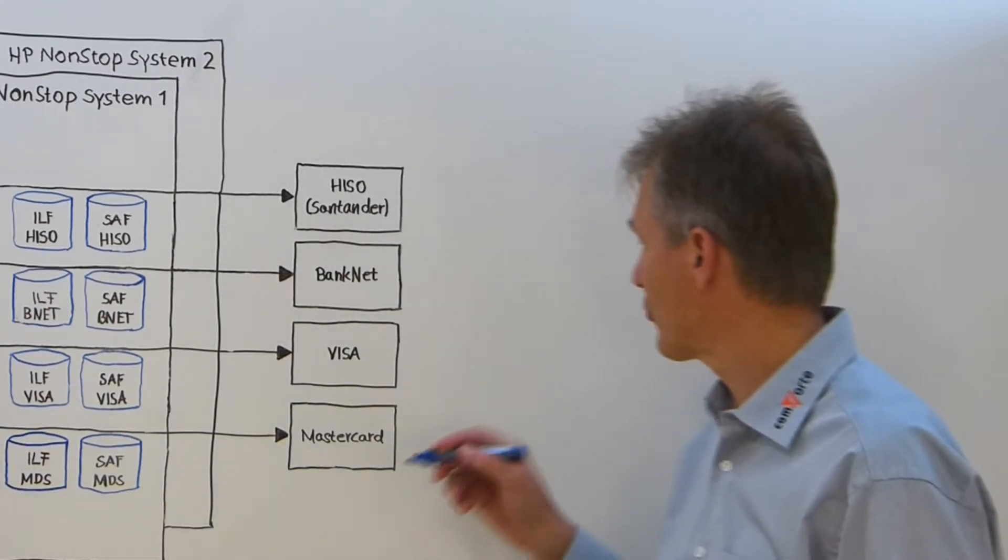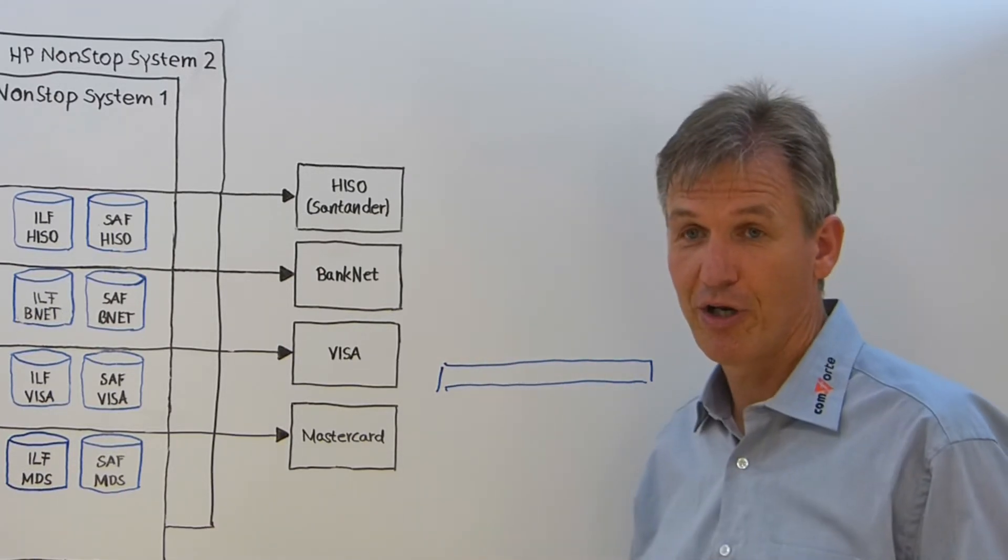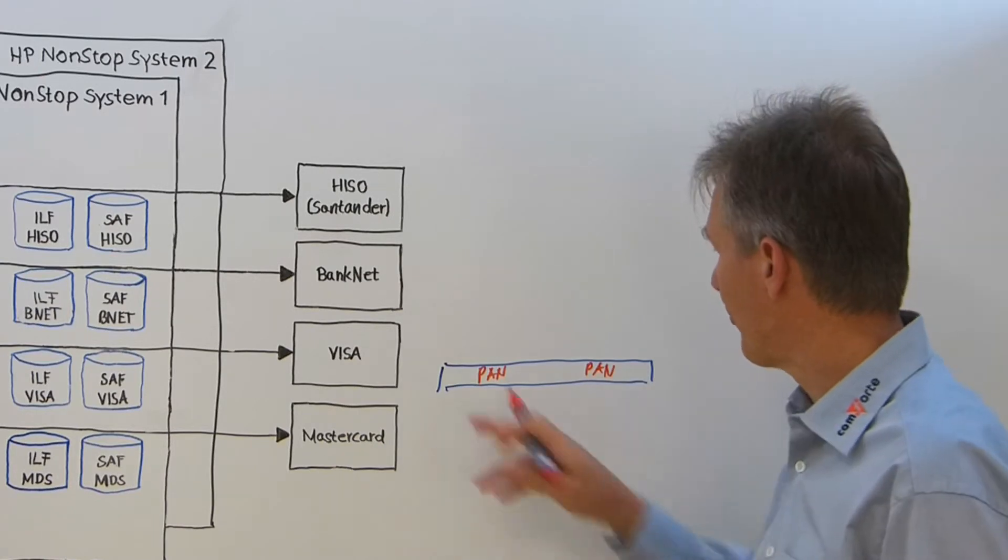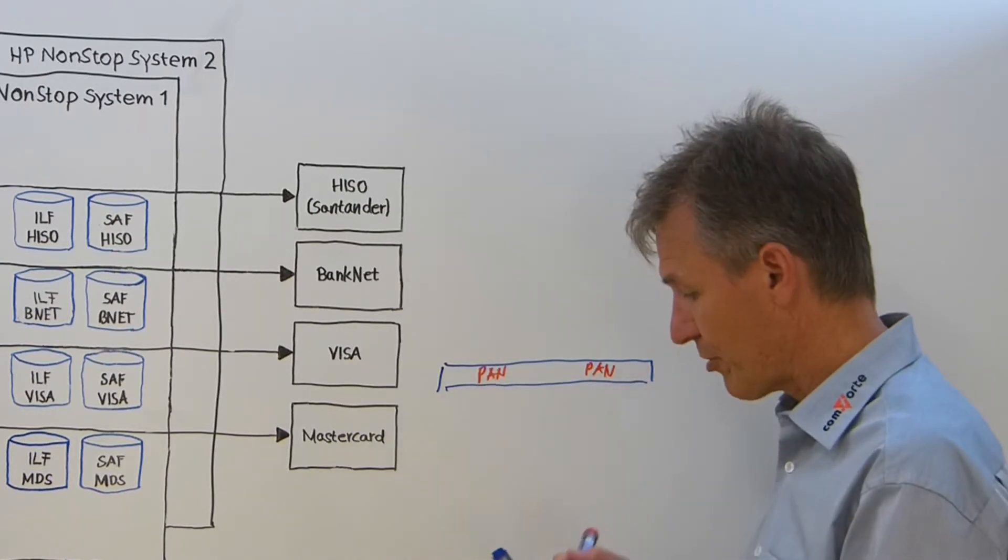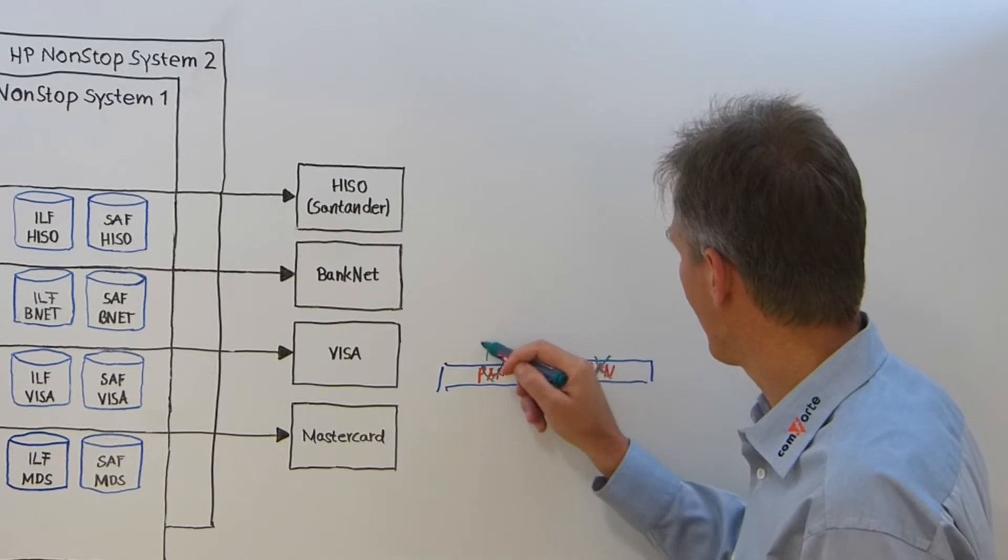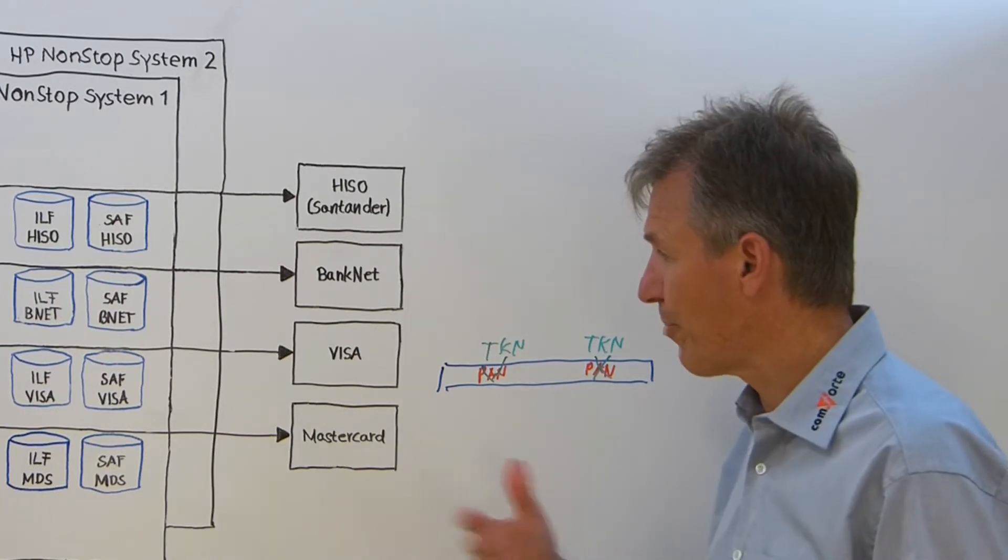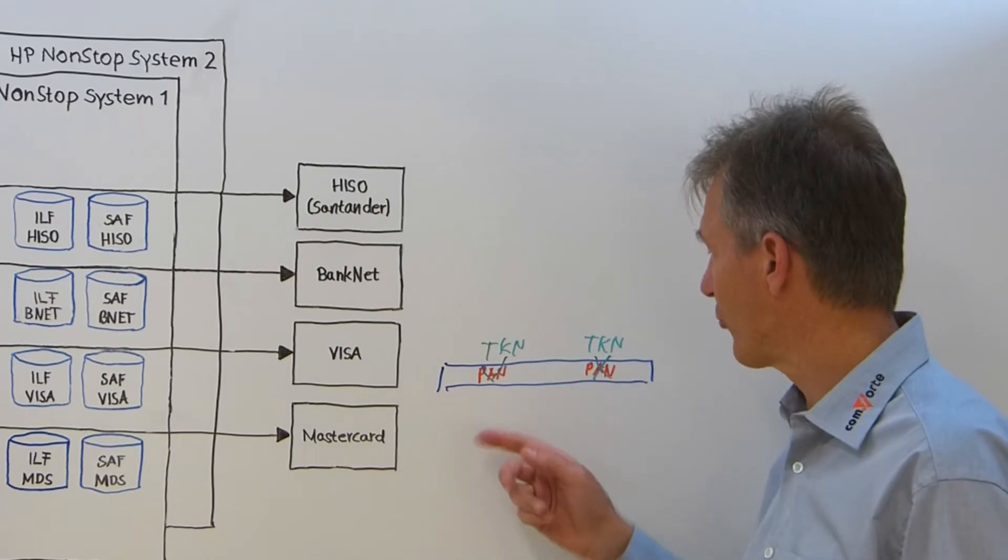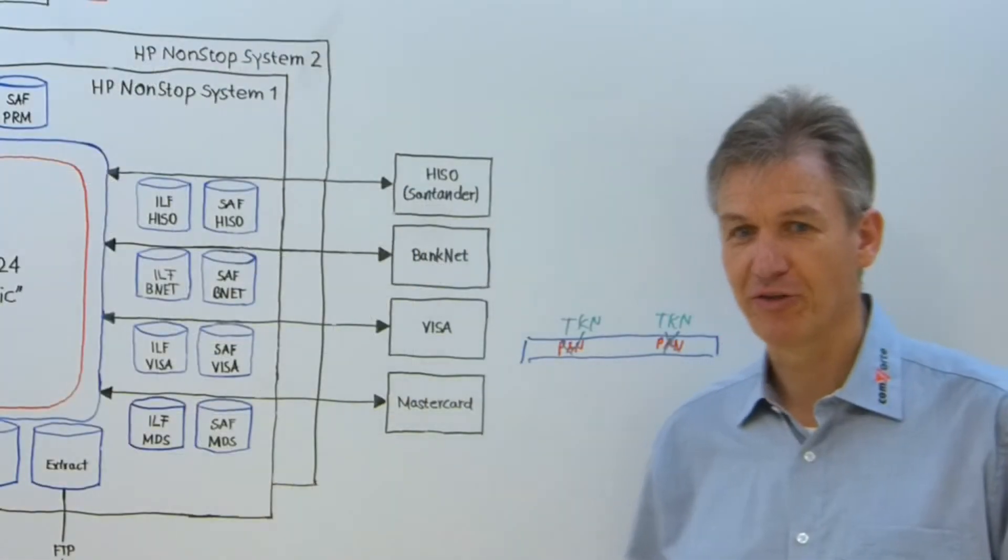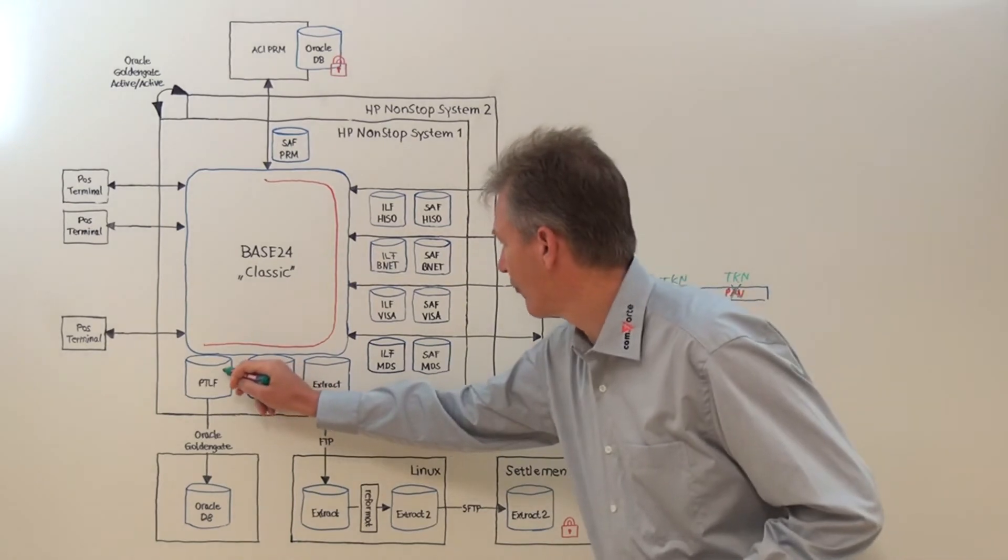Take the PTLF for example. Let's look at a PTLF transaction record. This transaction record typically has the PAN at multiple locations in this record. SecureData actually analyzes the record structure, locates all the PANs and replaces the PANs with a token. And obviously, when reading the data back from the database, the process is reversed and the token is replaced by the PAN to let BASE24 read the original PAN data. Now we protected the PTLF, replacing the tokens with PANs and have that file protected.